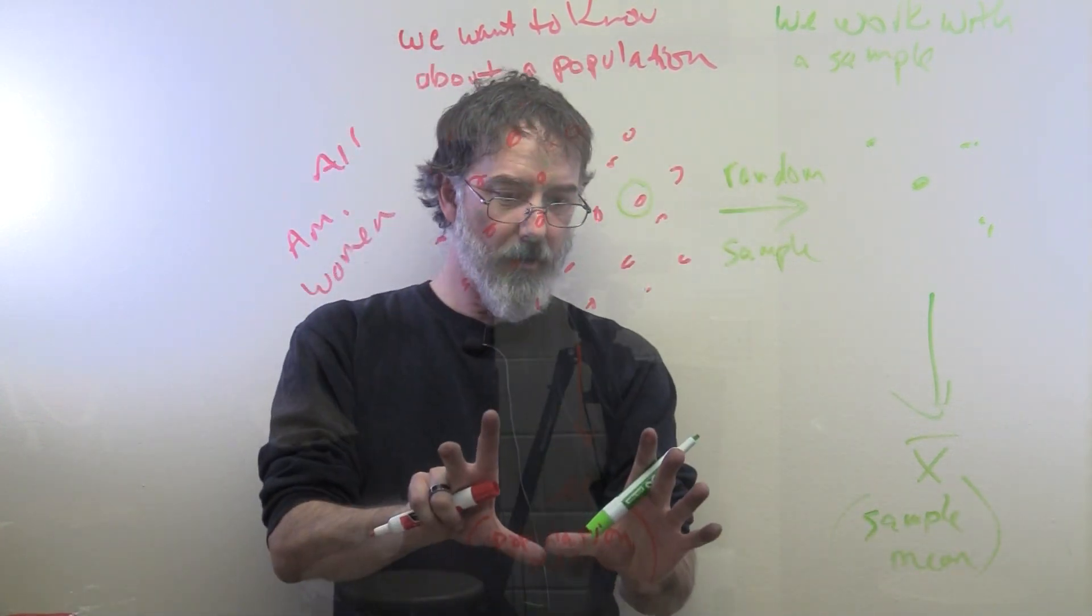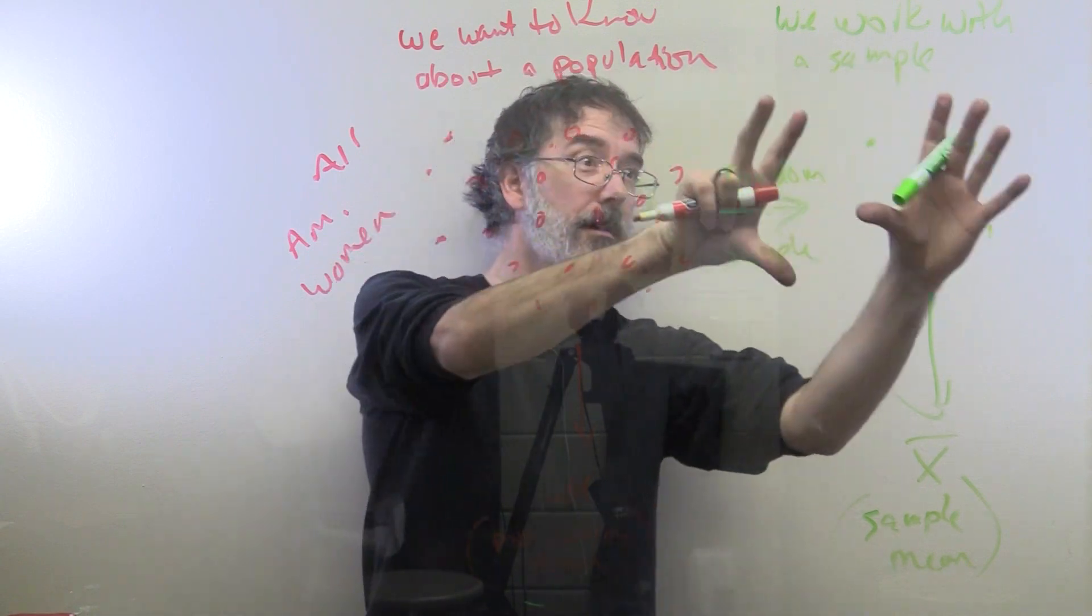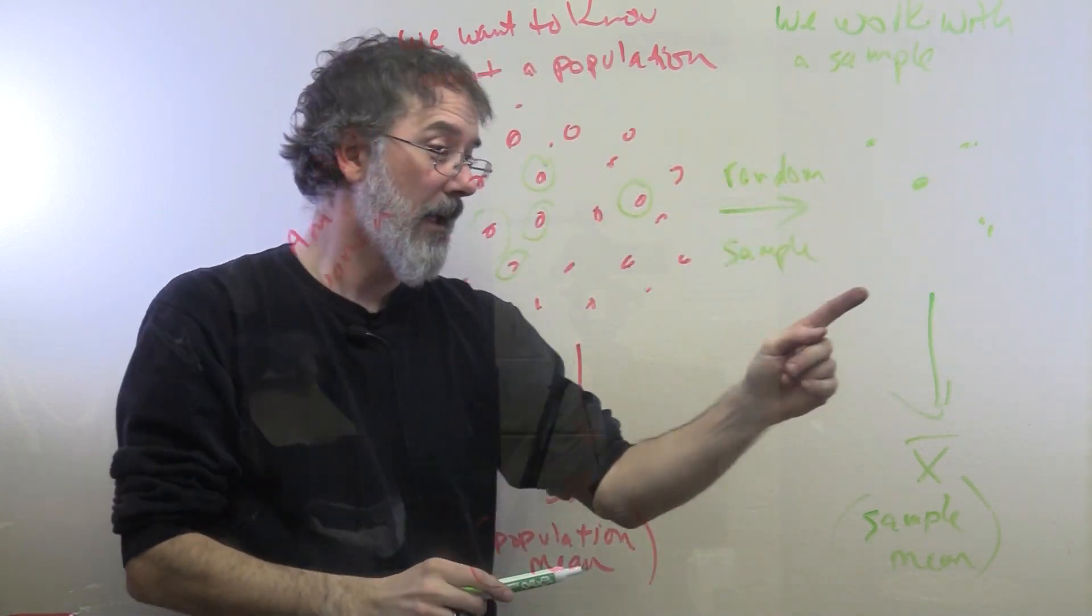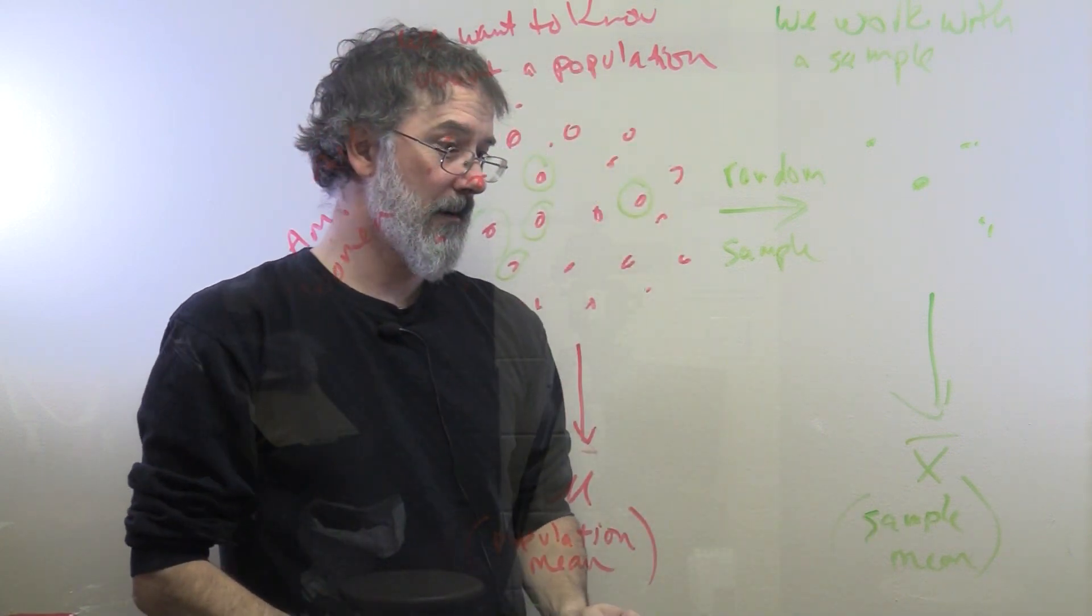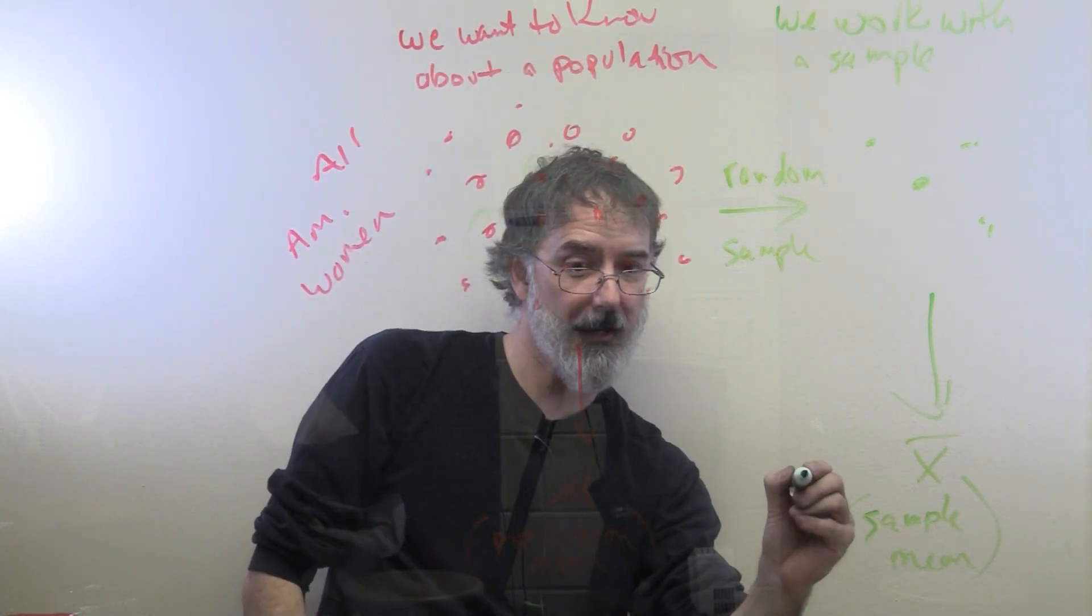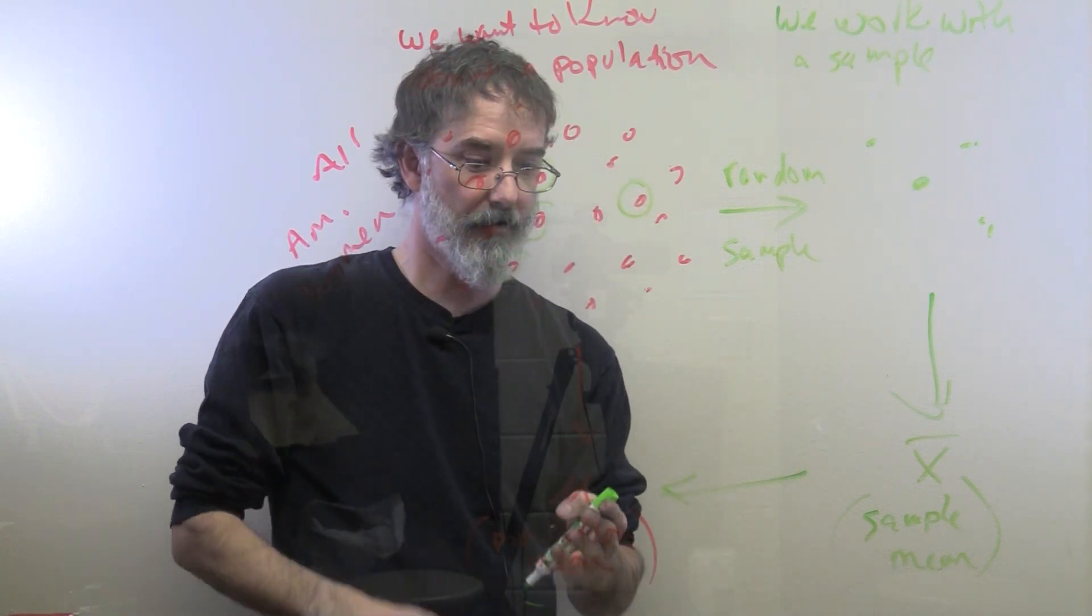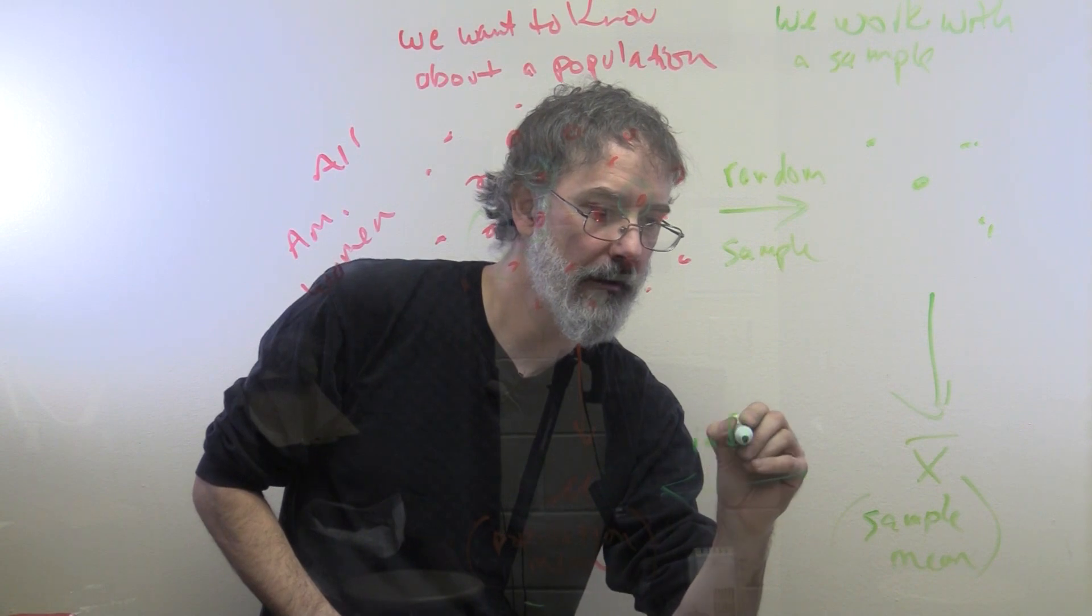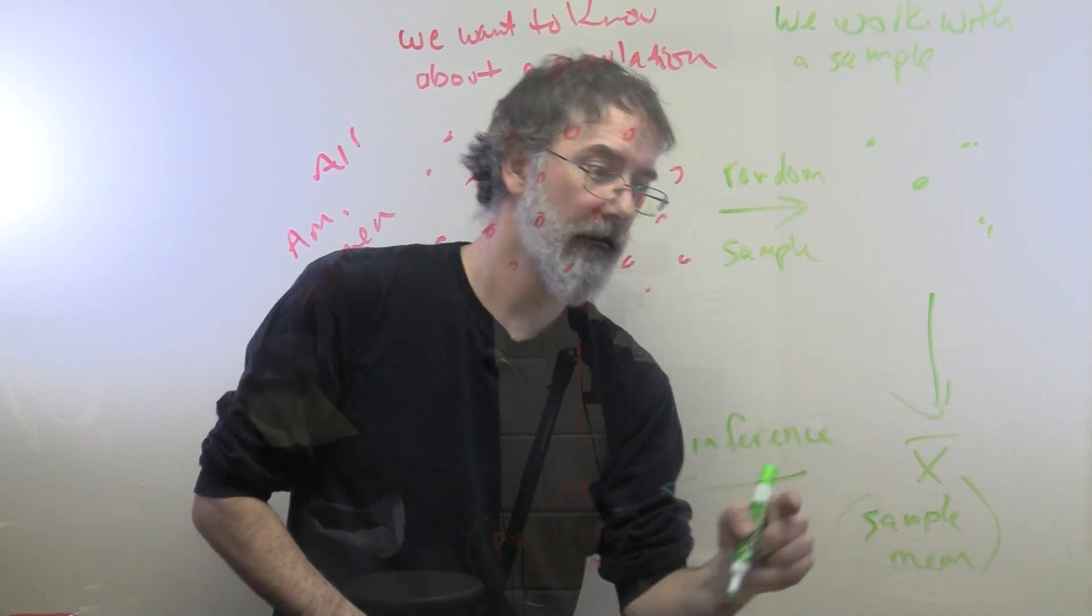So, we want to know the population mean, but we do not have access to all the people in the population. So, we have a subset of that population that came into our lab. We measure their height, and we have the sample's mean. Then what we are going to do is guess the population mean based on our sample mean. This is an inference we are making.